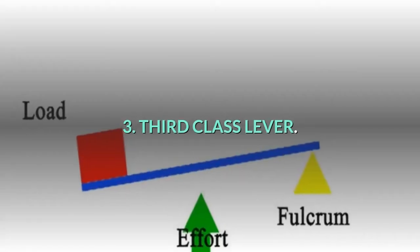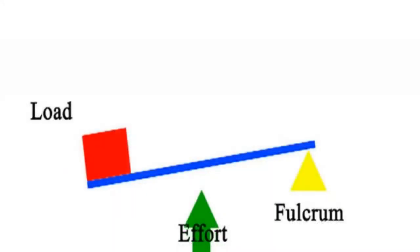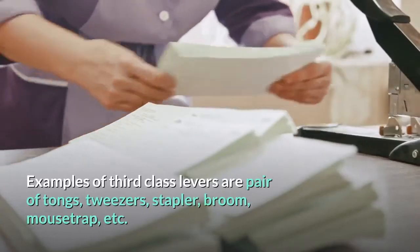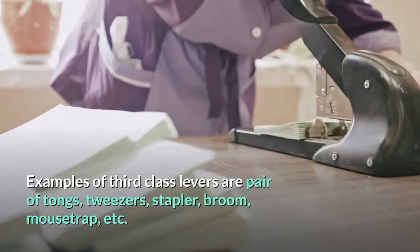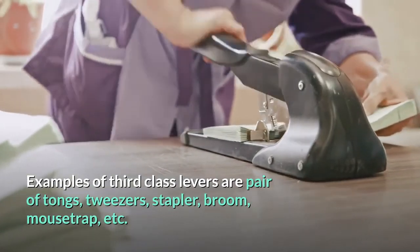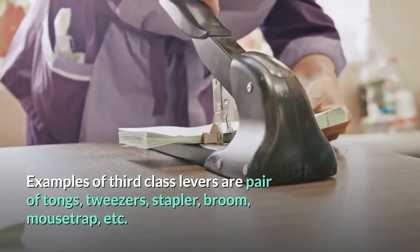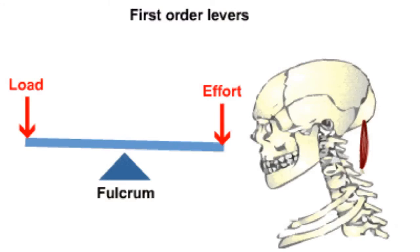A third class lever is a lever that has the effort between the pivot and the load. Examples of third class levers are pair of tongs, tweezers, stapler, broom, mousetrap, etc.